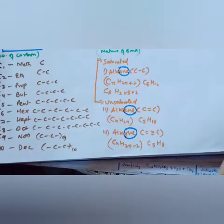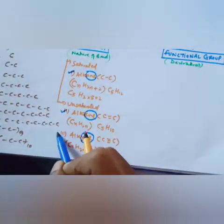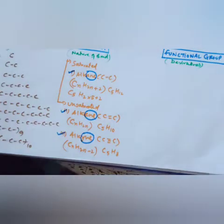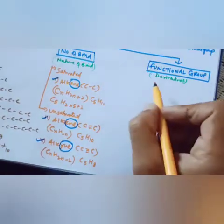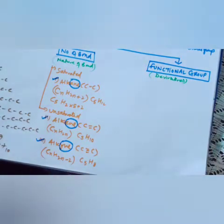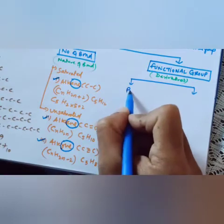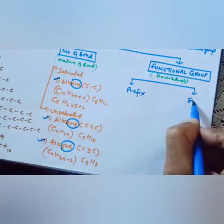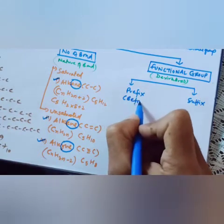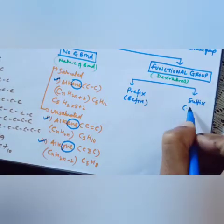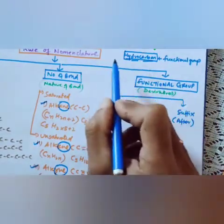These are the three different types of bonds. The third component is the functional group. There are two types of functional groups: prefix and suffix. Prefix will be written before the word root (hydrocarbon), and suffix will be written after the word root.